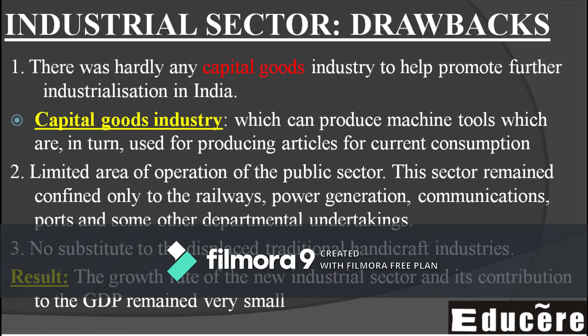The first drawback: there was hardly any capital goods industry to help promote further industrialization in India. Capital goods are goods that help produce other goods — for example, if you need a machine to make a thermocol sheet, that machine is a capital good. There was no capital goods industry in our country, so no machines could be made that could further help production.